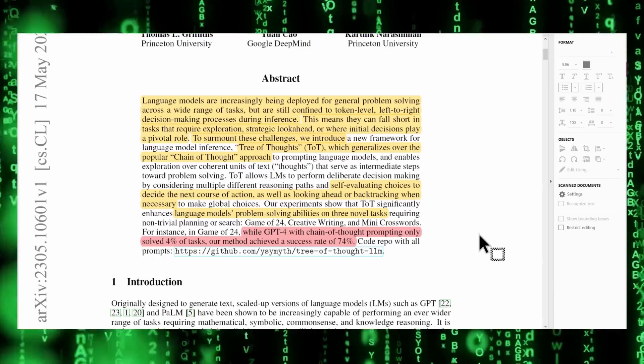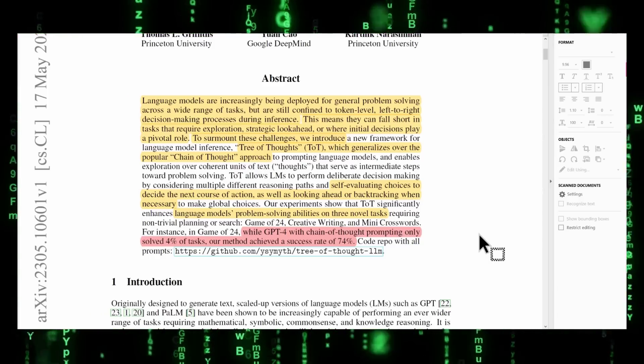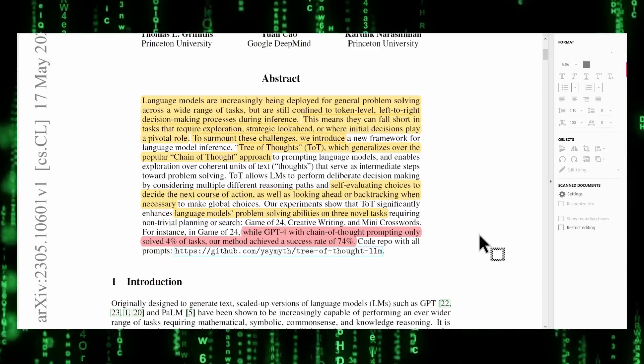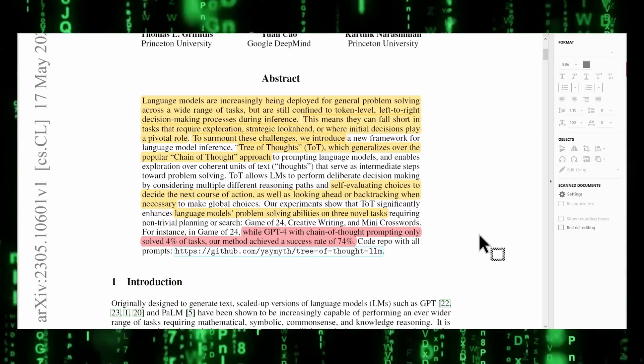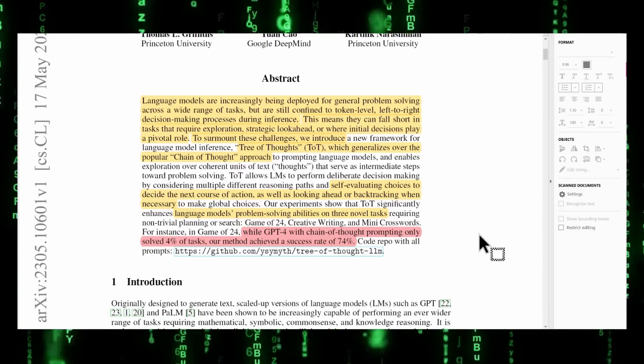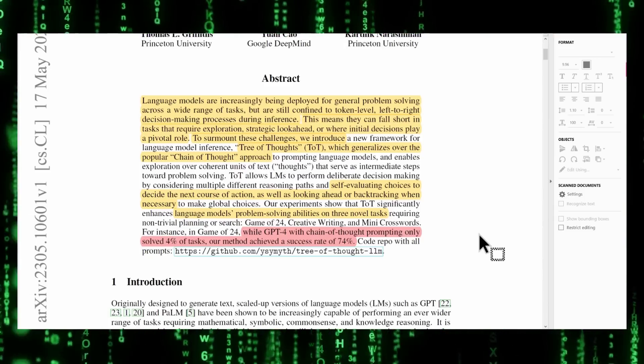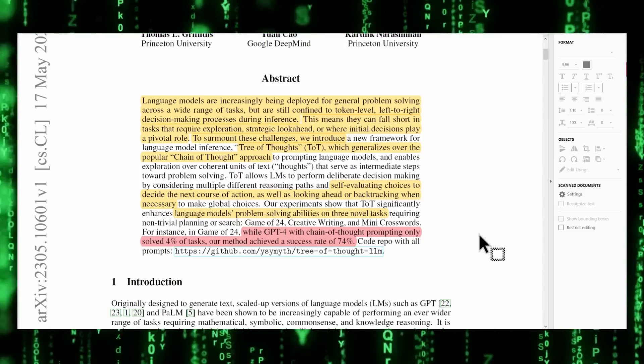As you can see here, in one of the tests, GPT-4 with Chain of Thought prompting only solved 4% of the tasks. So Chain of Thought, that's the next improved one, that's one step better than base level. While their method achieved a success rate of 74%, that's a 10x improvement.